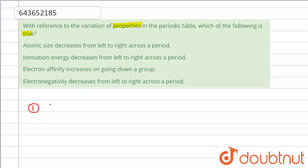We know that atomic size gradually decreases from left to right across the period of elements. From left to right, atomic size decreases, because within a period, all electrons are added to the same shell. The valence electrons are held closer towards the nucleus of the atom. As a result, atomic size decreases. So this statement is true.